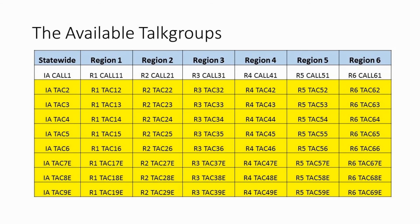The next set of talk groups are interoperable tactical, or TAC, talk groups. There are sets of regional and statewide interoperable TACs available. We are going to focus on TACs ending in 2 through 6. These are non-encrypted tactical talk groups that can be used for a variety of events. The regional TACs should be used primarily for interoperable events that will be confined to a Homeland Security region. It may be preferable if these events were static and non-mobile to prevent them from going out of their area.